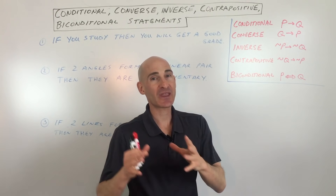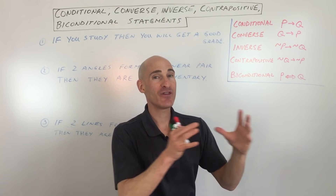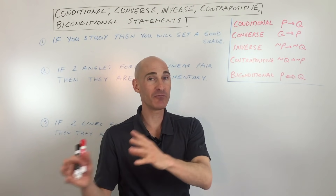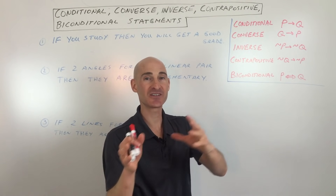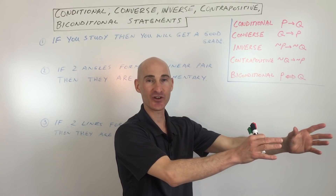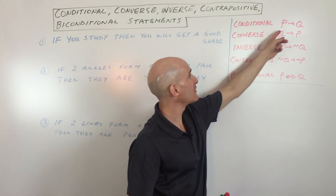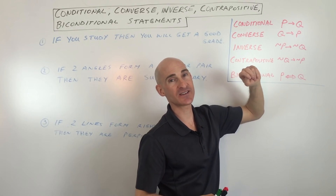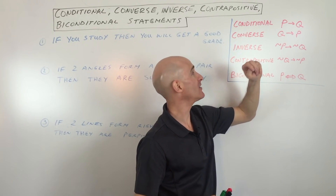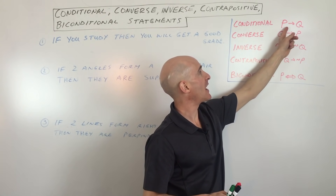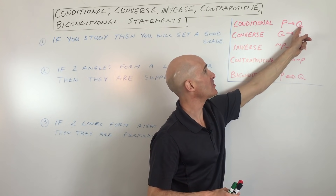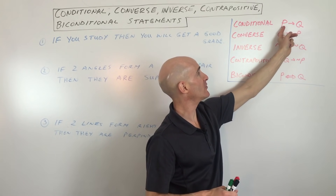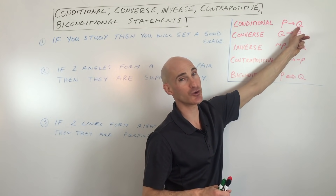A conditional statement is an if-then statement: if blank, then blank. So if the hypothesis, then the conclusion. We can abbreviate this as if P, then Q — you can think of the arrow as meaning 'then.' So P is the hypothesis and Q is the conclusion.